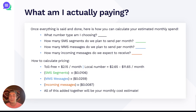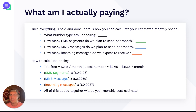So with all those numbers in mind, what are you actually paying? We have a super simple breakdown that will tell you what you're actually going to be paying per month with Twilio. First up, you're going to want to select which number type you're choosing. You can pick a toll-free — that's going to be $2.15 a month.